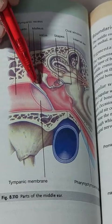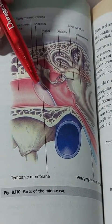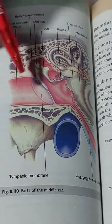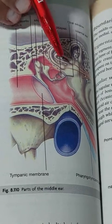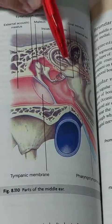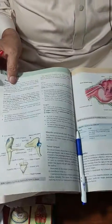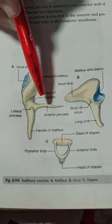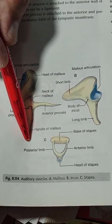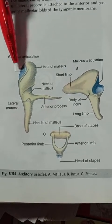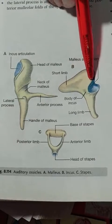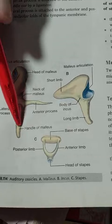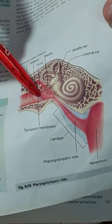The three ossicles — malleus, incus, and stapes — make a chain which transmits the vibrations of sound waves produced at the tympanic membrane through to the internal ear. The malleus bone has a head, neck, anterior process, lateral process, and the handle of malleus. With the head, a synovial joint is made with the incus, while the handle of malleus is in contact and adherent with the tympanic membrane.